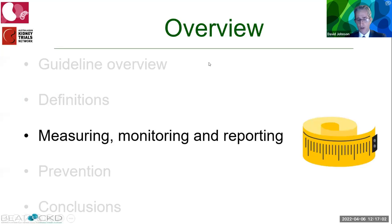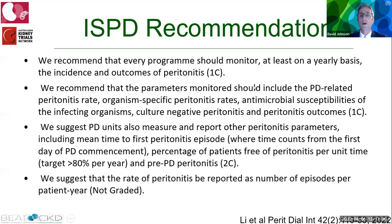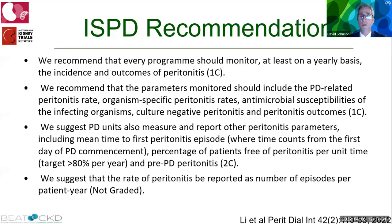Every program should monitor peritonitis incidence and outcomes at least yearly. Monitored parameters include PD-related peritonitis rate, organism-specific rates, antimicrobial susceptibilities, culture-negative peritonitis rate, and peritonitis outcomes. Units should also measure mean time to first peritonitis episode, percentage of patients free of peritonitis per unit time, and pre-PD peritonitis. Peritonitis rates should be reported as episodes per patient-year; patient-months per episode should no longer be used. To convert: divide 12 by patient-months per episode.